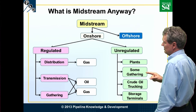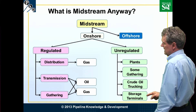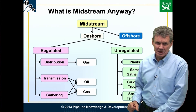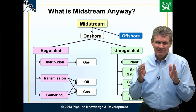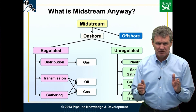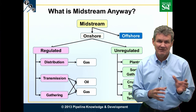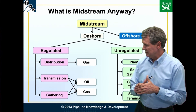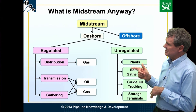On the unregulated side — unregulated with respect to economics — we have gas plants, some gathering lines, crude oil trucking, and storage terminals. Storage terminals may or may not be integral to the pipeline process; some storage facilities are included in the pipeline tariff, while others are separate from it.